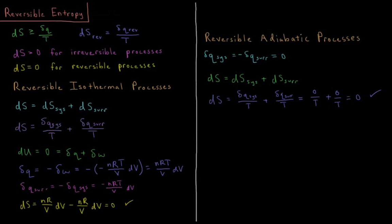This video will discuss entropy for reversible processes involving ideal gases. In previous videos, the change in entropy during some process for an isolated system has to be greater than or equal to the heat divided by the temperature. For a reversible process, we have the equality that dS equals zero, and dS is greater than zero for irreversible processes, leading to the two cases in that greater than or equal to.